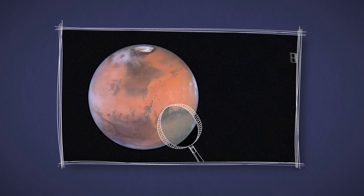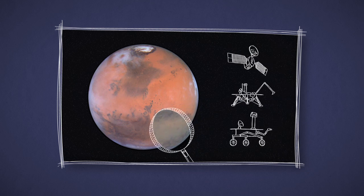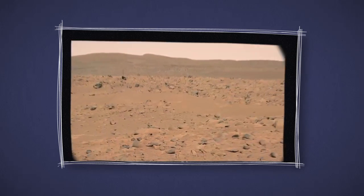But if you get a close-up view with an orbiter, lander, or rover, you'll see that a lot of Mars is actually more of a butterscotch color.